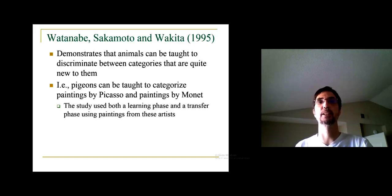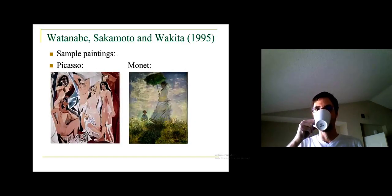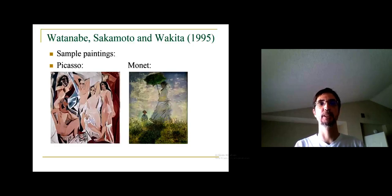Before we discuss more theories about categorization, I want to discuss an interesting experiment done a long time ago by Watanabe and colleagues. What they showed is that animals can be taught to discriminate between categories that are quite new to them, and that we might think are rather abstract. In particular, they showed that pigeons can be taught to categorize paintings by Picasso and Monet. So they can respond discriminatively to those categories. As with many of the other studies that we've talked about, there was a learning phase and a transfer phase, and these phases both involved using paintings from these artists. Here you can see some example paintings. On the left we have a painting by Picasso, and on the right we have a painting by Monet. As you can see, very different style.